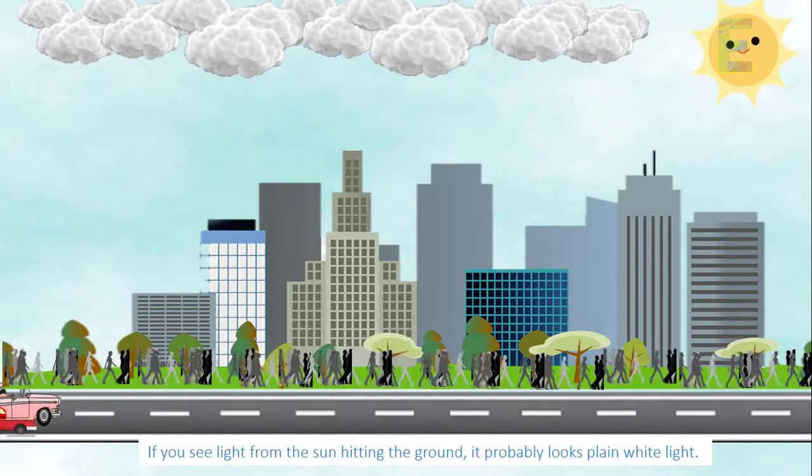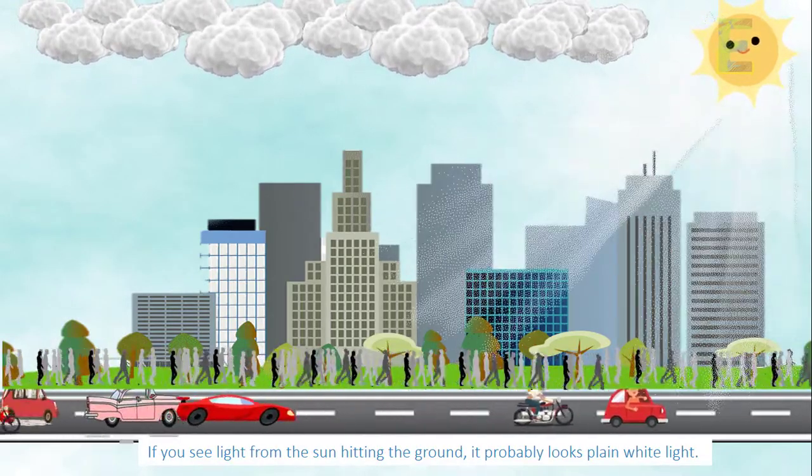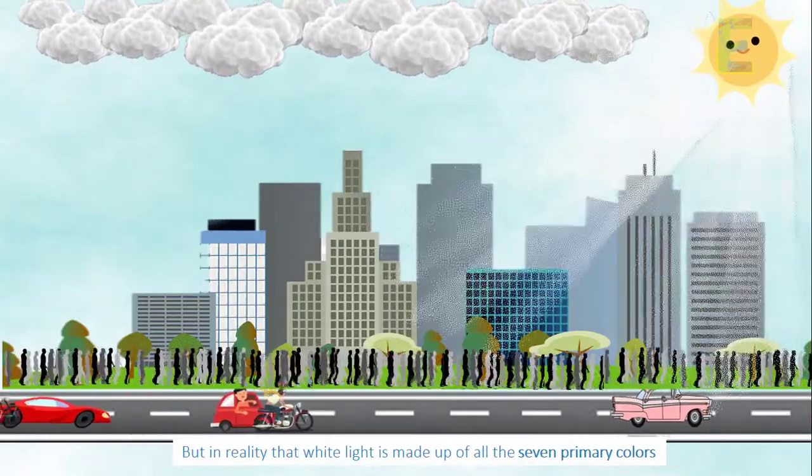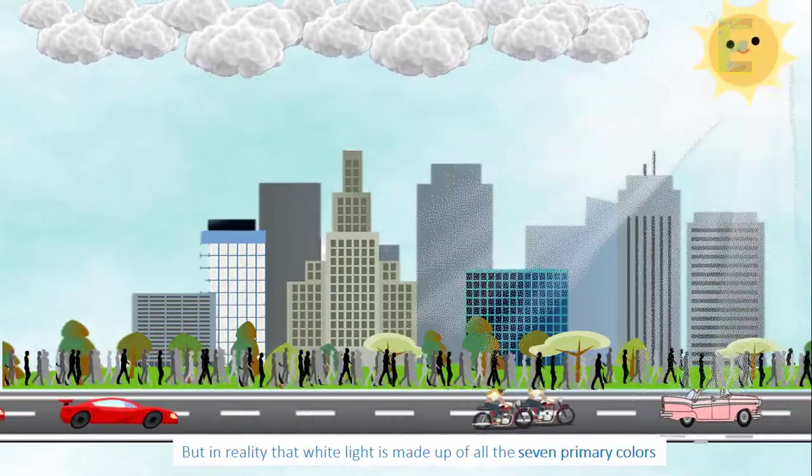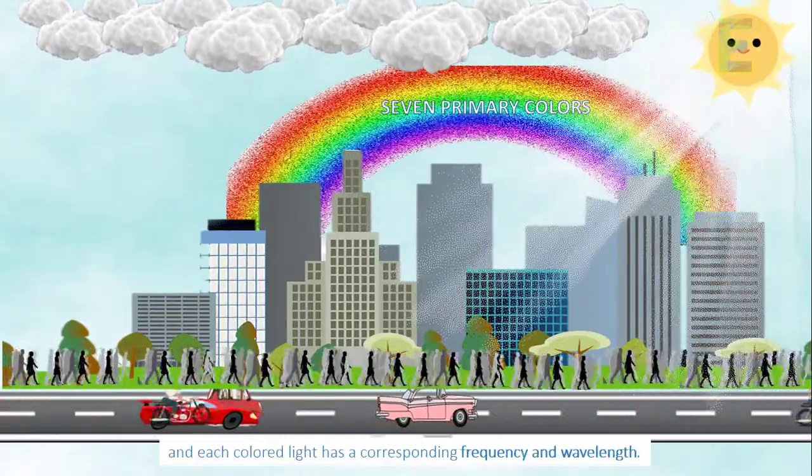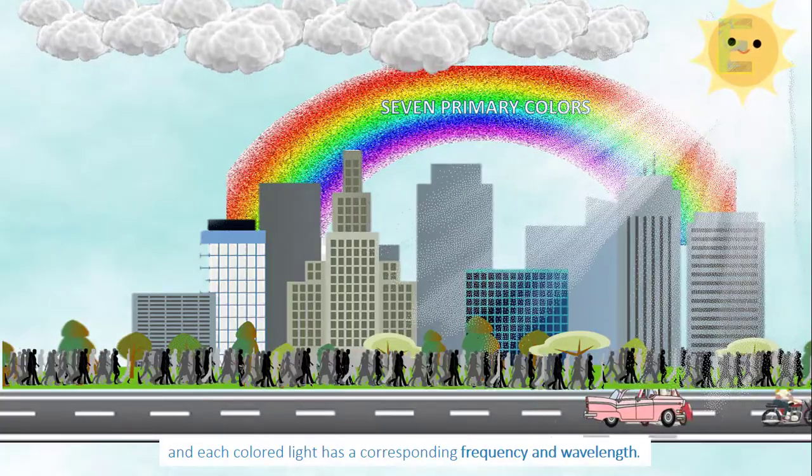If you see light from the sun hitting the ground, it probably looks plain white light. But in reality, that white light is made up of all the seven primary colors and each colored light has a corresponding frequency and wavelength.